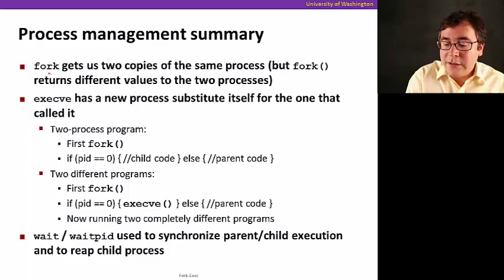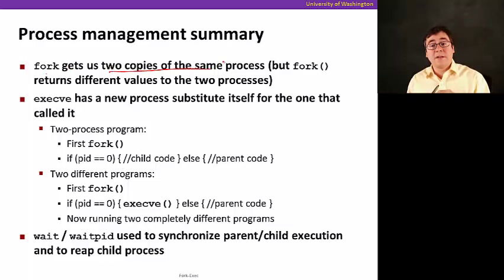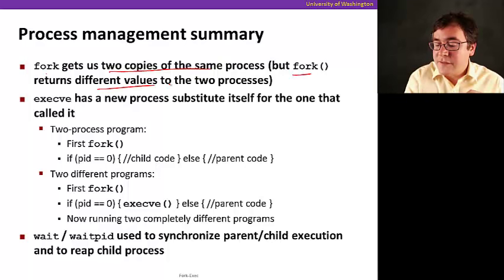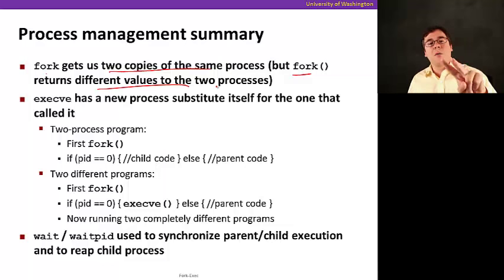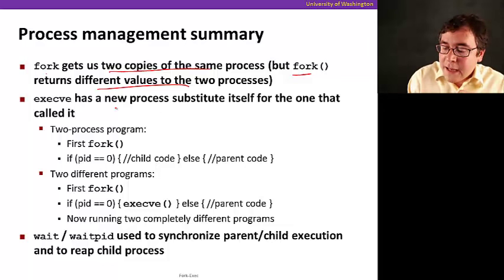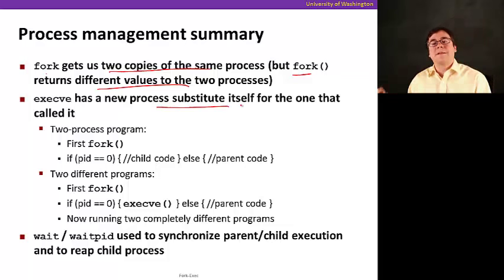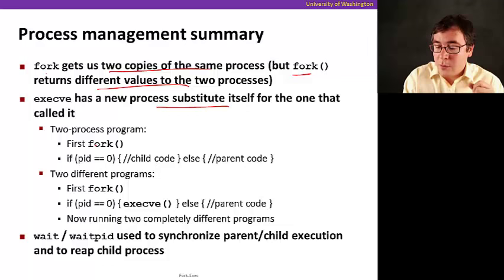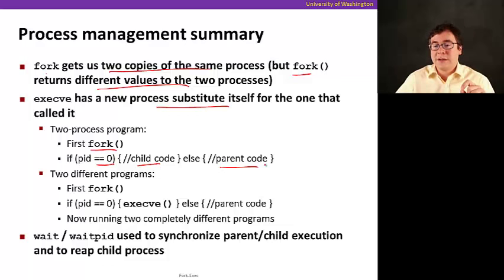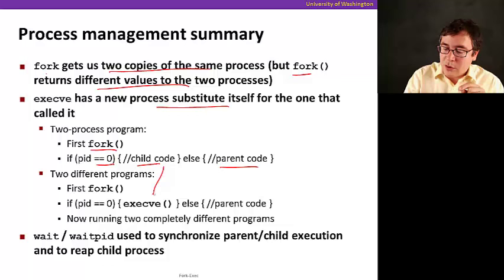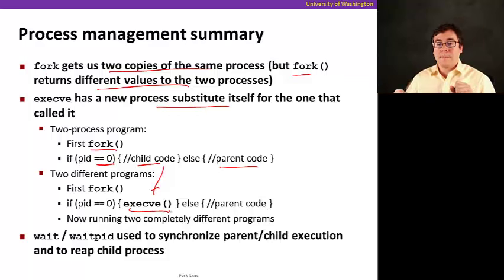So to summarize, recall that fork gets two copies of the same process. But fork returns different values to the two process. And fork is a special function. You call once, but you return twice because that's the point where it replicates the process. So execv has a new process replaces itself with the one that called it. So it's a two process program. So when you call fork, here's an example of a two process program. You first call fork, and if the PID is zero, that's the child code. Otherwise, it's the parent code. And that's where you'd use. And in the child code, that's where you call execv to replace itself with a new program. So now at that point, you have two completely different programs.